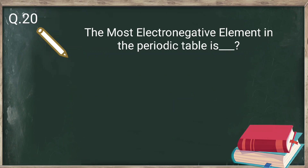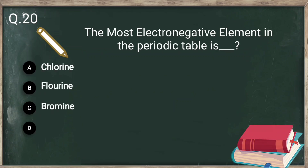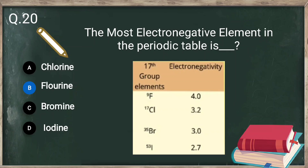Question number 20: the most electronegative element in the periodic table is fluorine. Fluorine's electronegativity is 4.0, making it the element with the highest electronegativity.